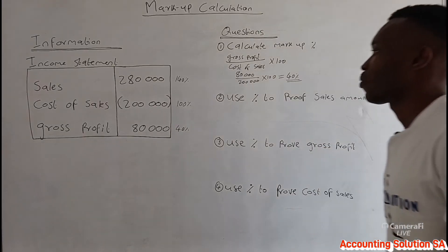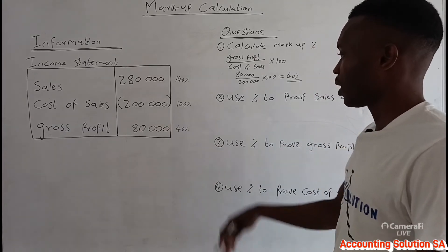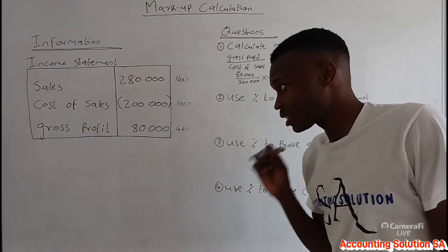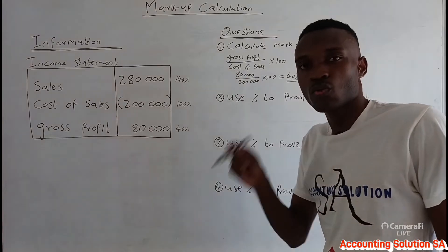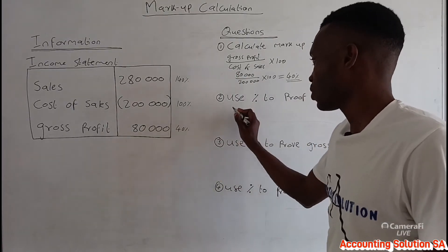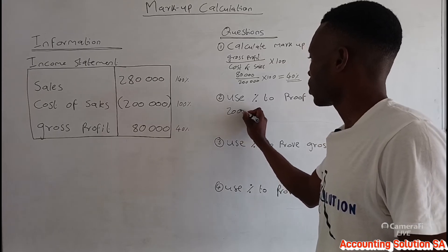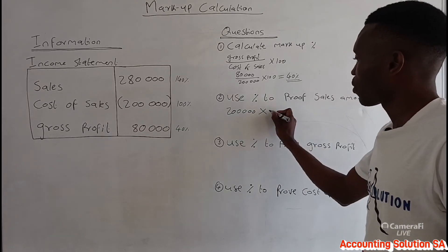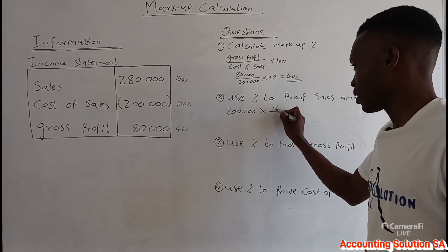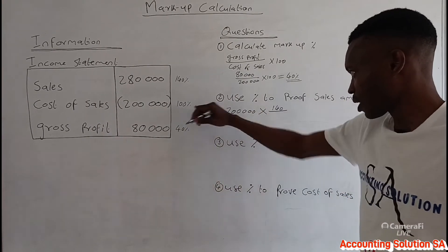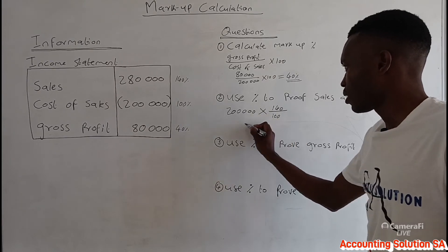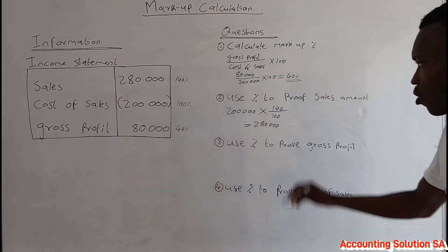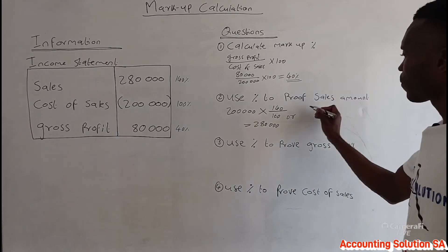We want the sales amount. Let's use cost of sales — we don't want to just add the two figures, we want to prove it using the markup. So you take 200,000 of cost of sales, and what you are looking for is sales, which is 140 percent, over what you have, which is 100 percent. If you do this calculation you are going to get 280,000.